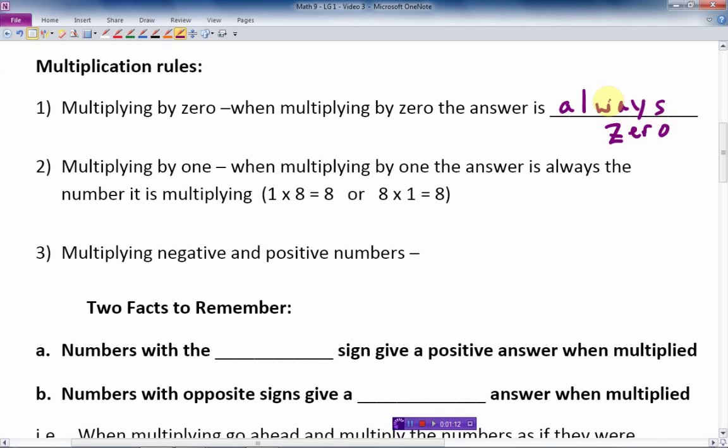Multiplying by 1, when multiplying by 1, the answer is always the number it is multiplying. So there's a couple of examples. 1 times 8 is 8, or 8 times 1 is 8. 1 times anything equals the thing it's multiplying. And those two rules are very straightforward.